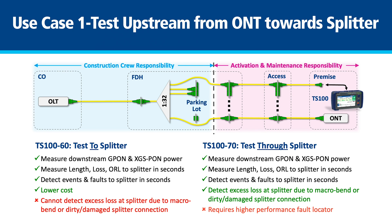The higher performance TS100-70 can test through the splitter, measure splitter loss and compare it to user-settable min and max loss limits, enabling technicians to identify poor connections or macro bends at the splitter.